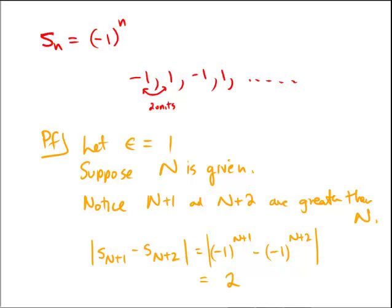Always going to be 2. And 2 is certainly bigger than or equal to 1, and 1 was our epsilon. So I could have chosen any number that was smaller than 2, and it would have worked for this argument, showing that (-1)^n diverges. So this diverges.